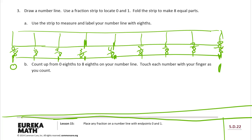Now count up from zero eighths to eight eighths on your number line, and touch each number with your finger as you count. So I'm just going to count it. Zero eighths, one eighth, two eighths, three eighths, four eighths, five eighths, six eighths, seven eighths, eight eighths.